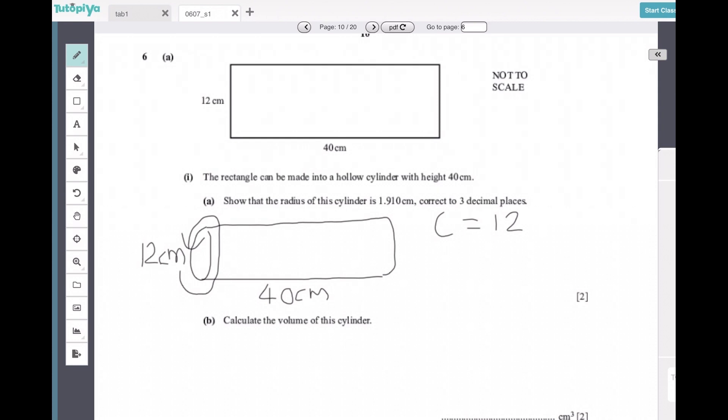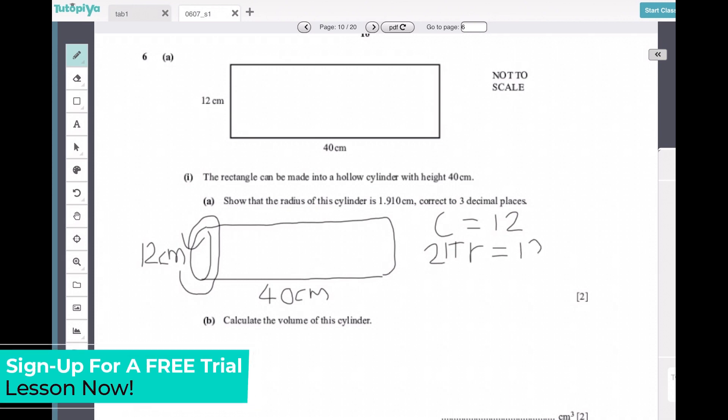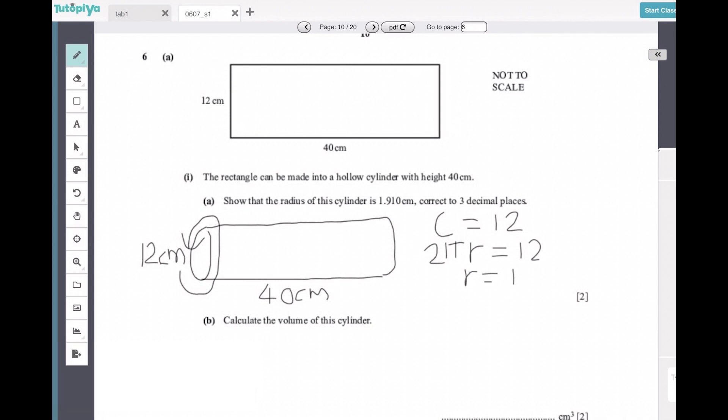Therefore, now we know the circumference of the circle is equivalent to 12 centimeters, which means for any circle we are considering this to be 2πr, which is equal to 12. Therefore, r is equal to 12 divided by 2π, which we can simply plug into our calculators to obtain the 1.910 centimeters that is required.